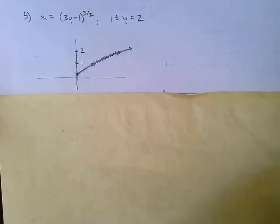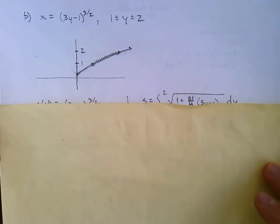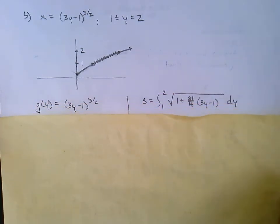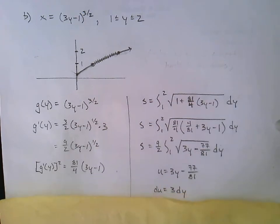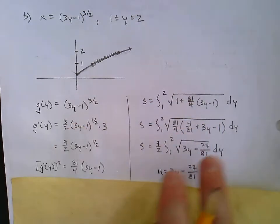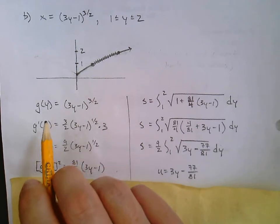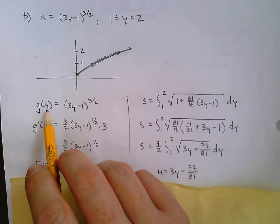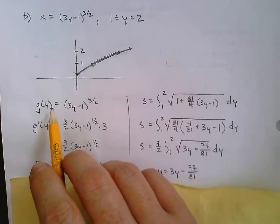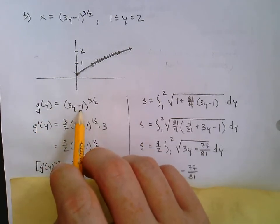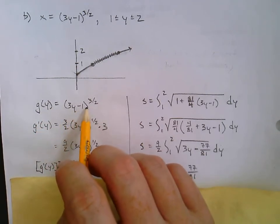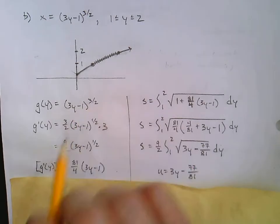So to go about this again, we don't need to do anything special. Let me just show you my work here, and then we'll pick it up here, and then go to the other side. So g of y equals 3y minus 1 to the 3 over 2.